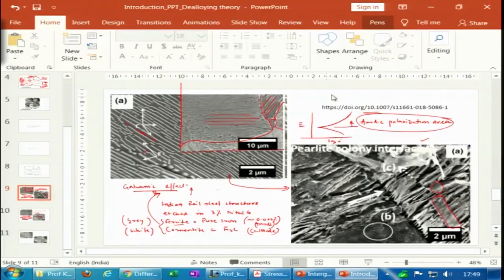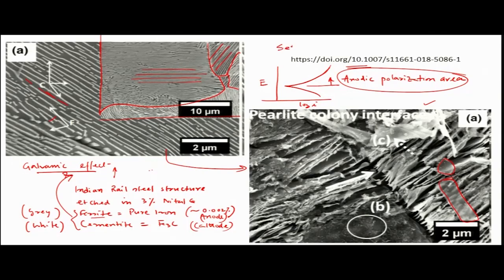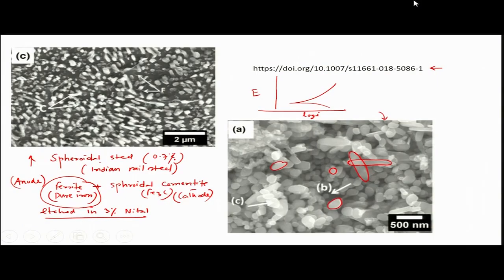This selective leaching — or dealloying of ferrite — expresses itself clearly. Similarly, another example was seen in the case of spheroidal steel, where initially it was pearlitic steel and then converted into spheroids by spheroidizing heat treatment. Preferential dissolution of iron or ferrite leaves behind free-standing spheroids of cementite. Please go back and look at lecture 17 to understand these two pictures. This reference is from work done at IIT Kanpur.